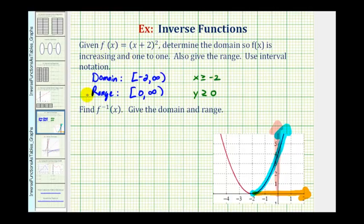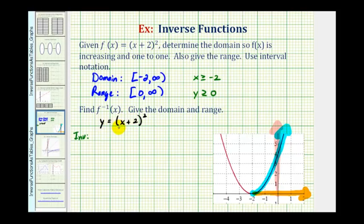With this restriction, the function f is now one-to-one, so we can find f inverse of x. To do this, let's first write the original function replacing f of x with y. So we have y equals the quantity x plus two squared. Then to find the inverse, we interchange the x and y variables and then solve for y. So we have x equals the quantity y plus two squared.